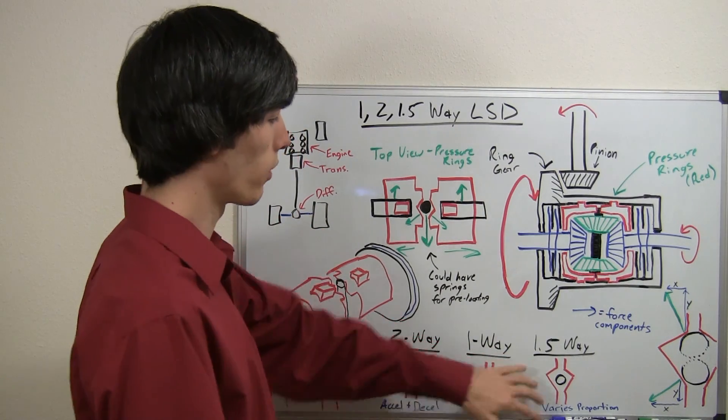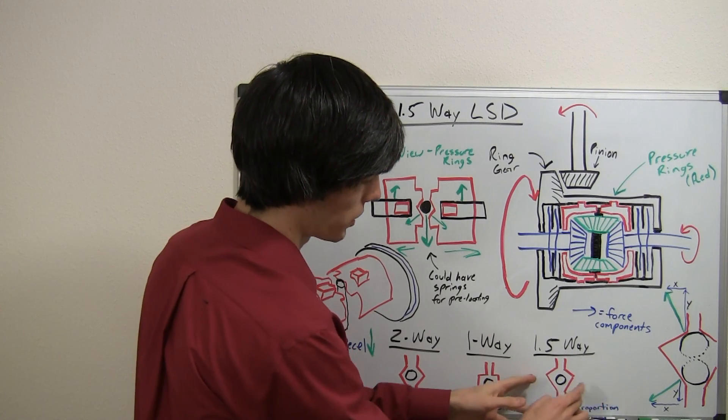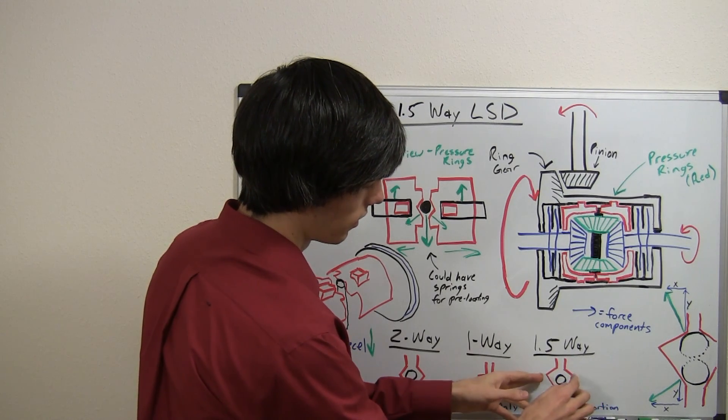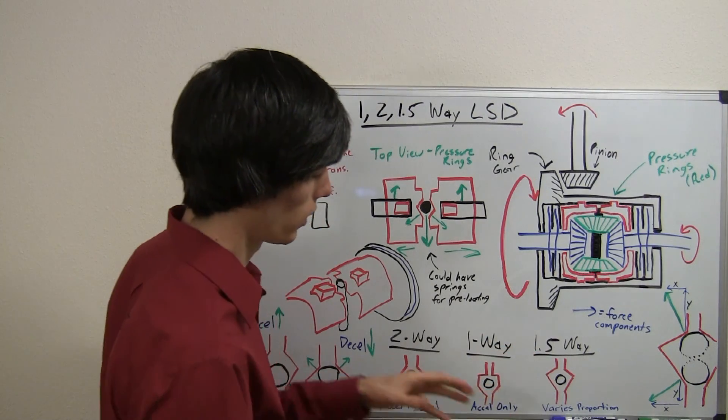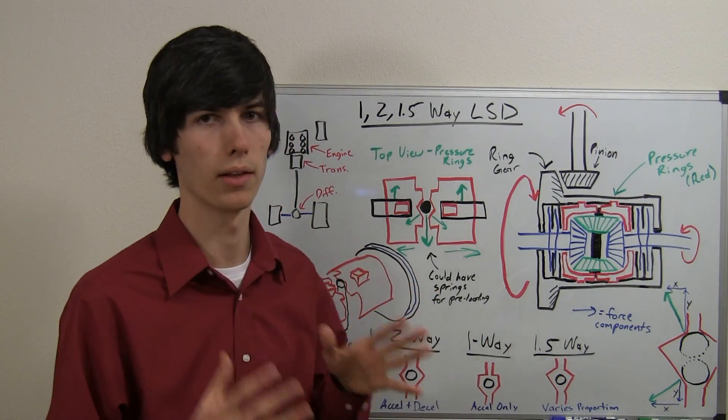So a one-point-five-way is kind of the best of both worlds, where you have a various proportion. So when you accelerate, you have one force, and you're going to lock them up a bit more than when you decelerate.